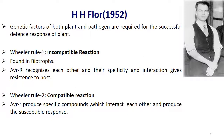Coming to HH Floor. In 1952, he concluded that genetic factors of both plant and pathogen are required for a successful defense response in plants. There are two rules supporting Floor's hypothesis: Wheeler's rule 1 and Wheeler's rule 2. Wheeler is a separate scientist who supported Floor's conclusions. Wheeler's first rule talks about incompatible reaction found in biotrophs. According to this first rule, AVR and R recognize each other and their specificity and interaction gives resistance to the host.